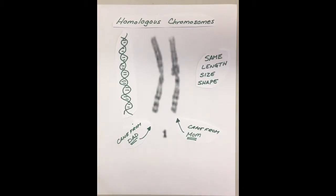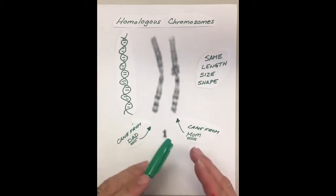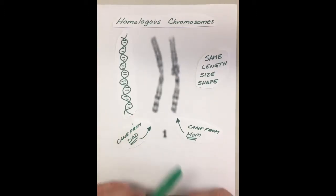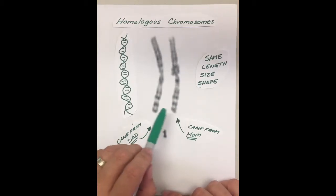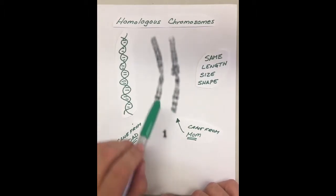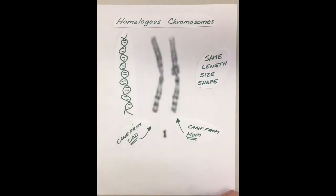You actually inherit 23 chromosomes from dad and 23 chromosomes from mom. When you pair them all up — which we'll do in the next video — you'll find that you have 23 pairs of chromosomes that are the same size and same shape.